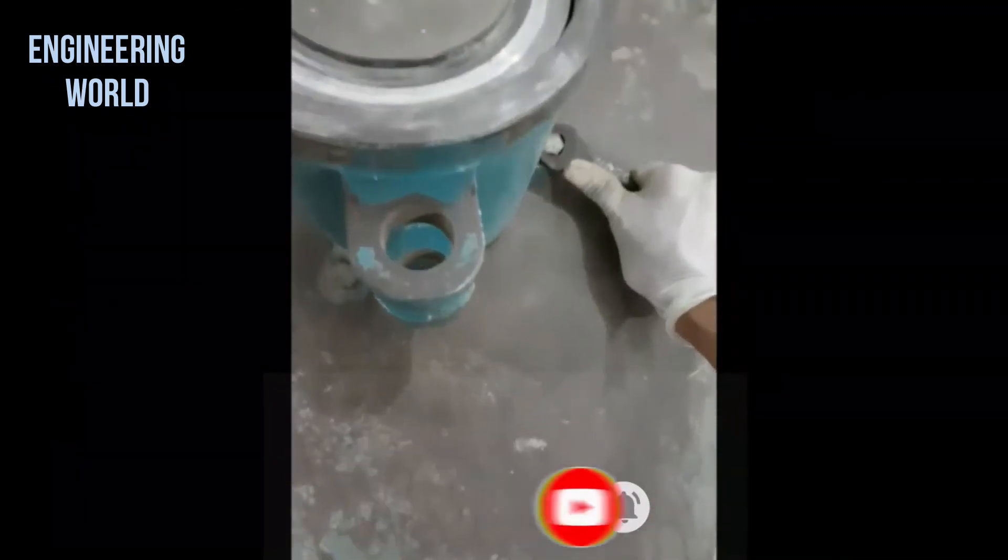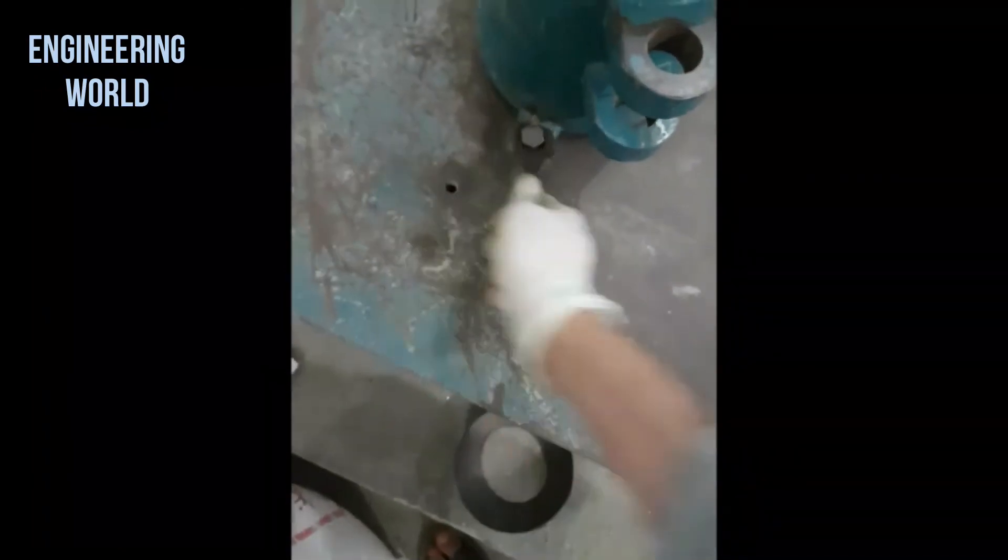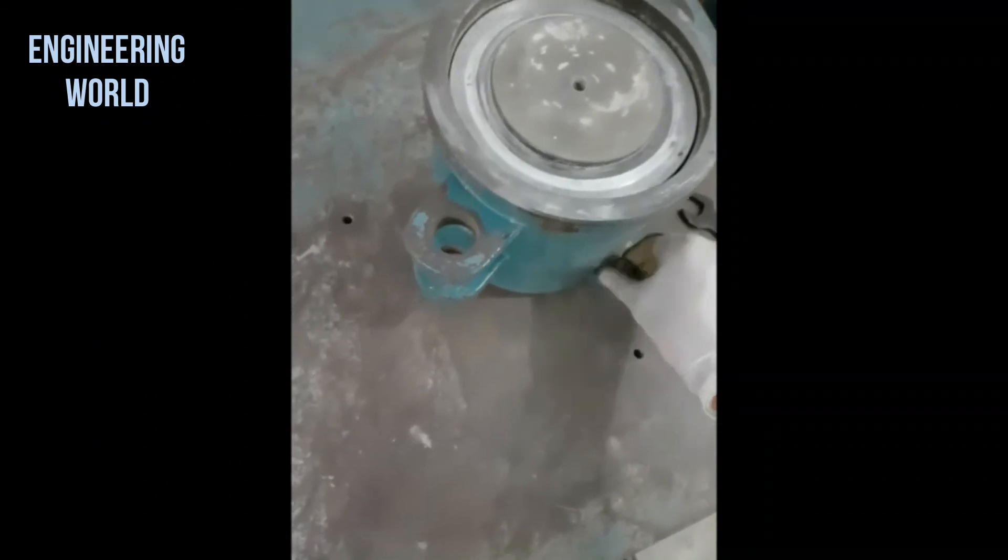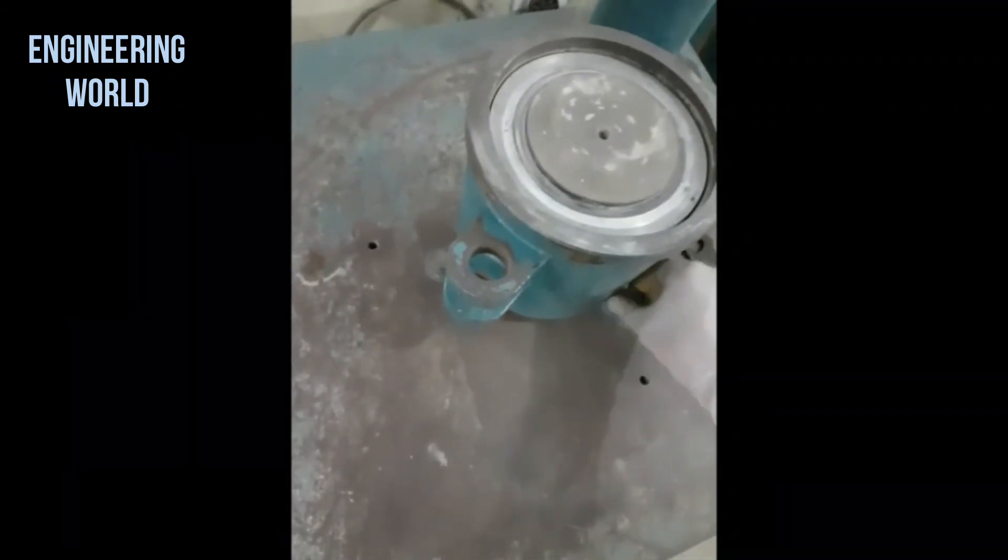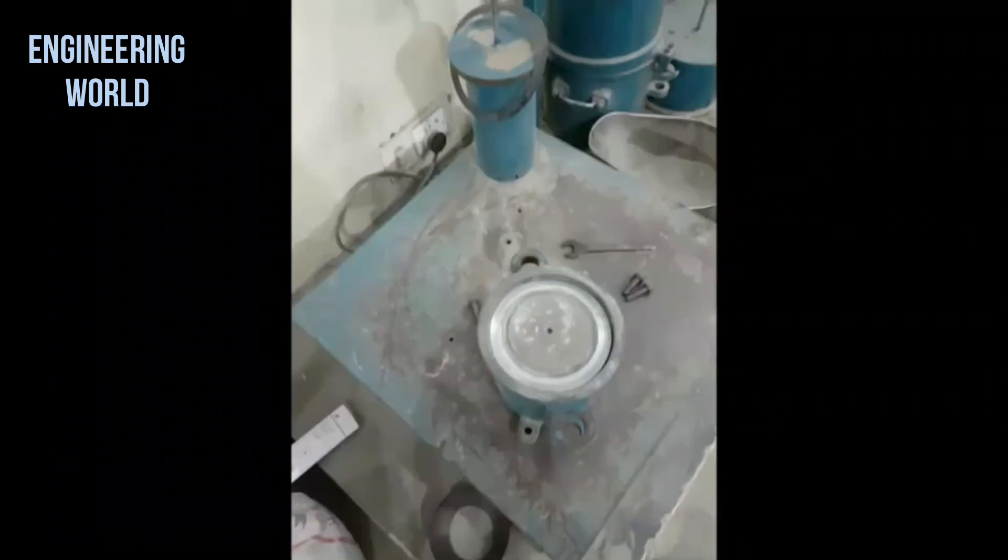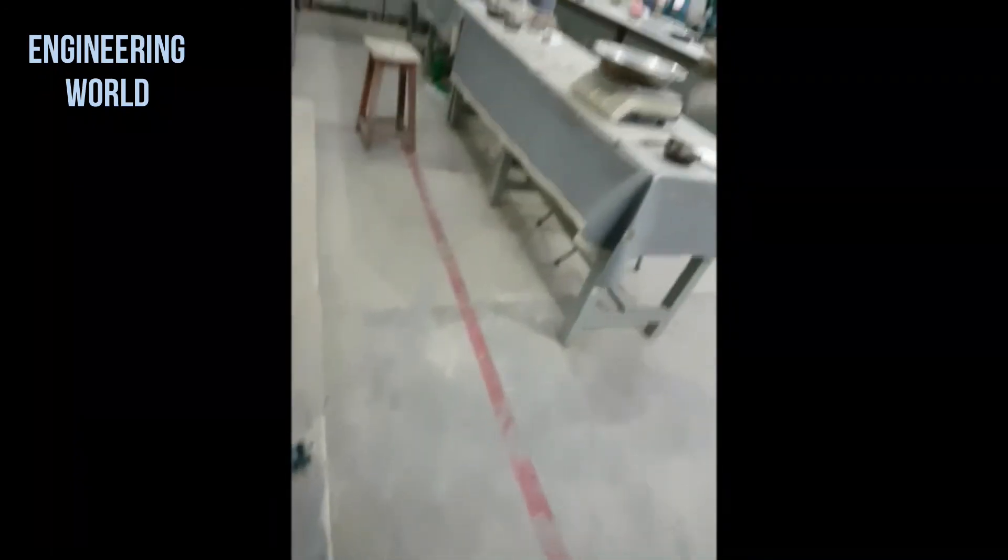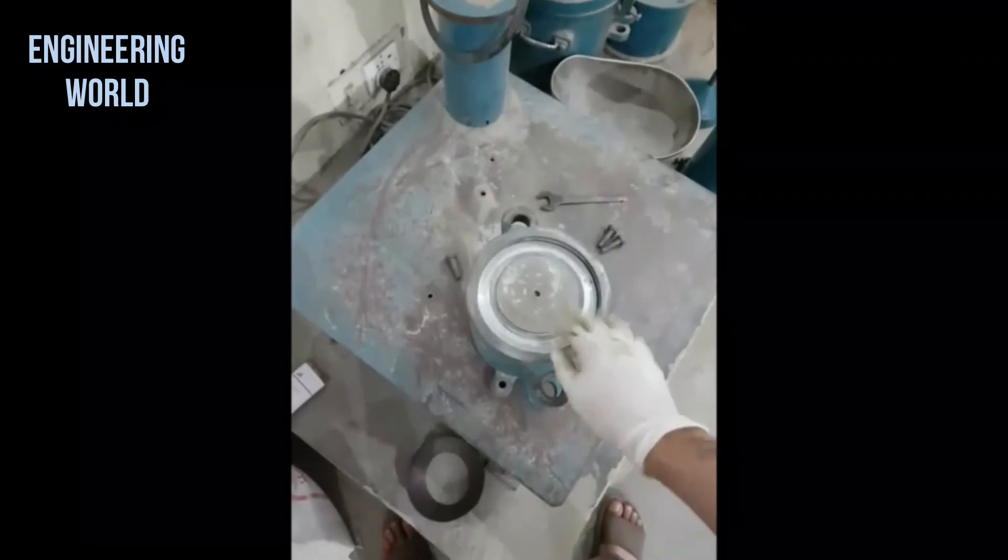We will then unclamp the bolts that are holding the mold to the vibrating table. After releasing the mold from the vibrating table we will lift it up and take it over to the weighing balance where we will offload the contents of the mold into the large container.